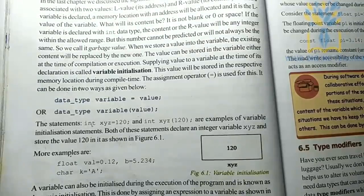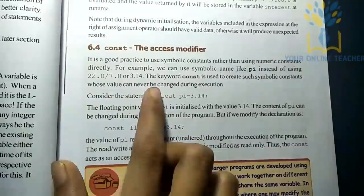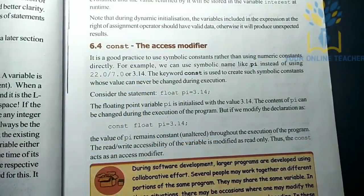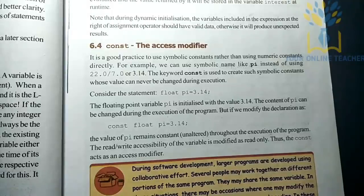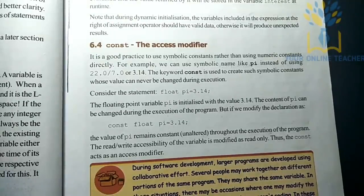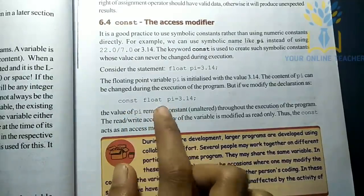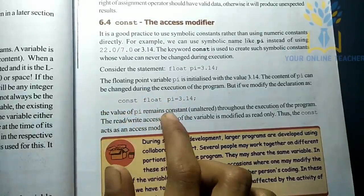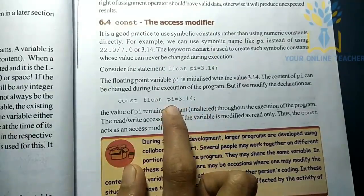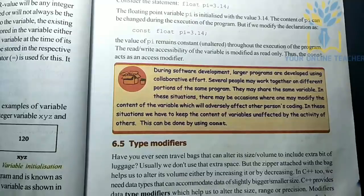Next is the constant access modifier. We assign a constant number, for example 3.14. The first value cannot change in a program — it is called a constant variable. The most important constant value used in programs is 3.14.